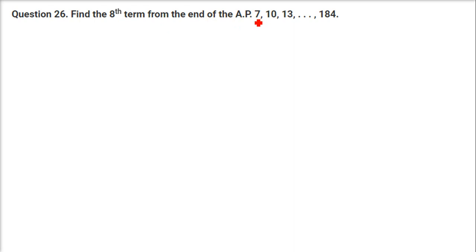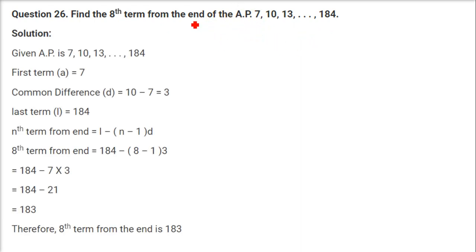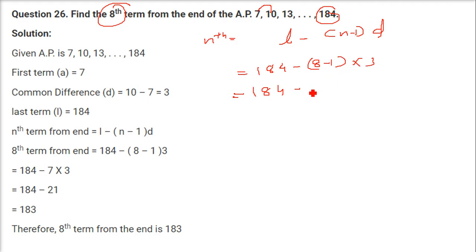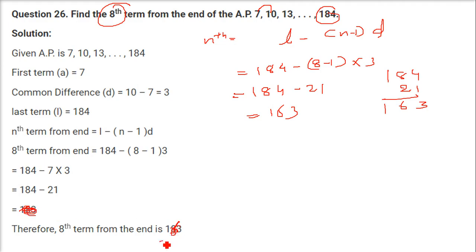Find the 8th term from the end of an AP. We use the direct formula: Nth term from the end = L − (N−1)×D. L = 184, N = 8, D = 10 − 7 = 3. So: 184 − (8−1)×3 = 184 − 7×3 = 184 − 21 = 163. The 8th term from the end is 163.